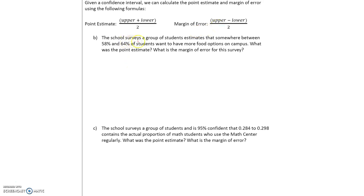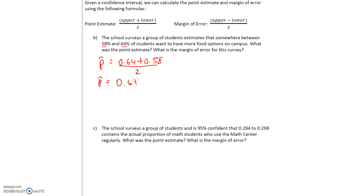For example, a school surveys a group of students and estimates that somewhere between 58% and 64% of students want to have more food options on campus. What was the point estimate p-hat? Well, p-hat is the upper plus lower values of the confidence interval divided by 2, so it will be 0.64 plus 0.58 divided by 2. P-hat is equal to 0.61.